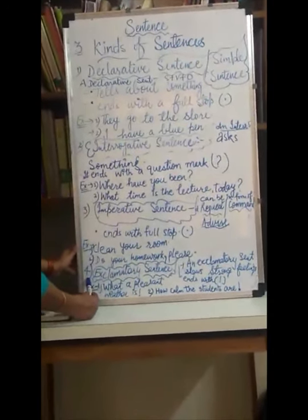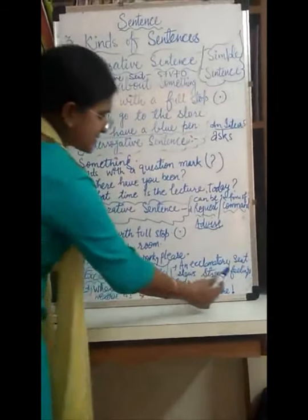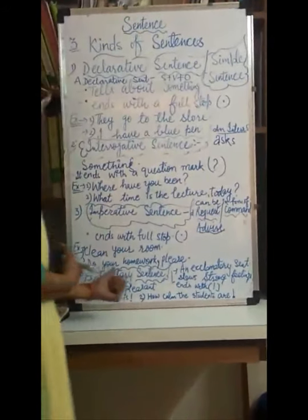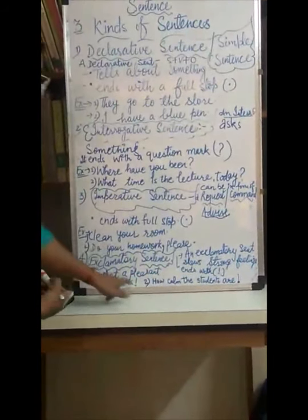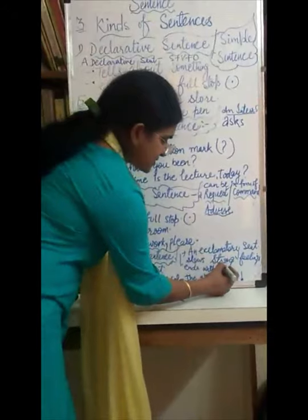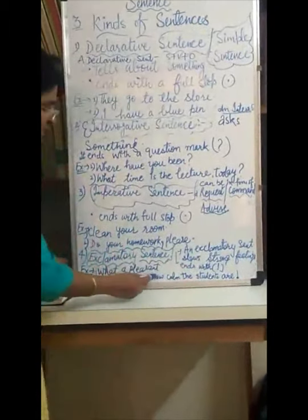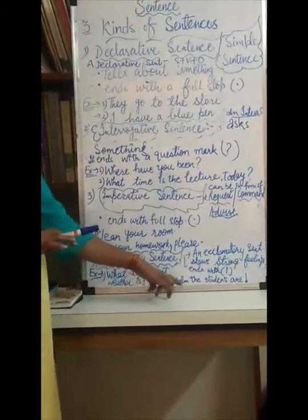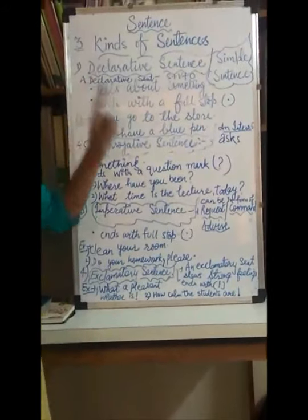We move on to the last kind: the exclamatory sentence. An exclamatory sentence shows a strong feeling or expression, and it ends with an exclamation mark. Examples: 'what a pleasant weather!' and 'how calm the students are!' — the second might be used when a class is completely silent. I hope all four kinds of sentences are clear to you.